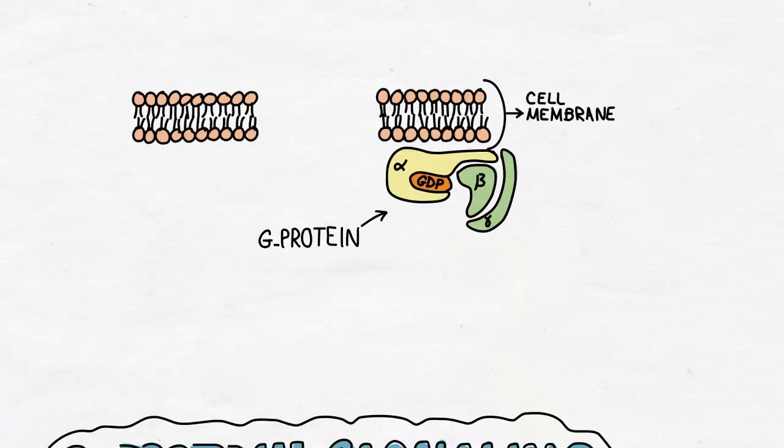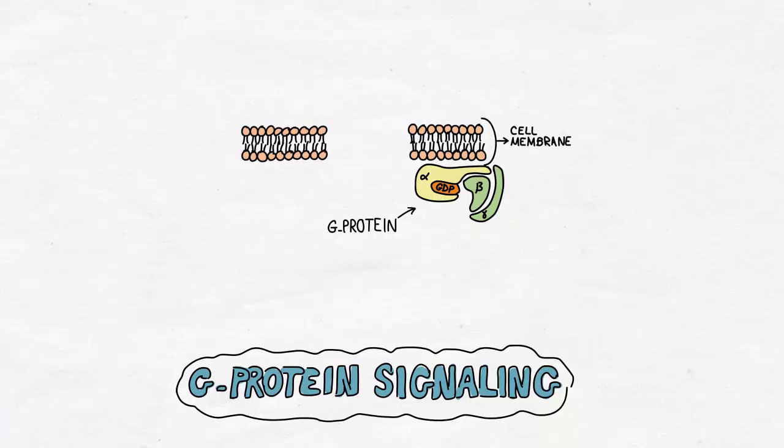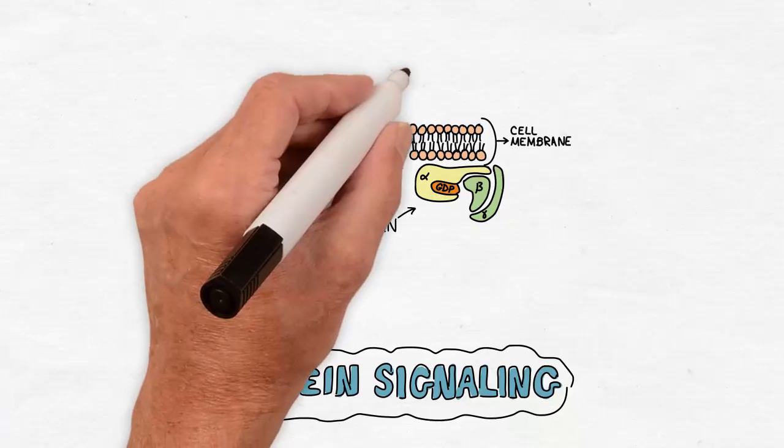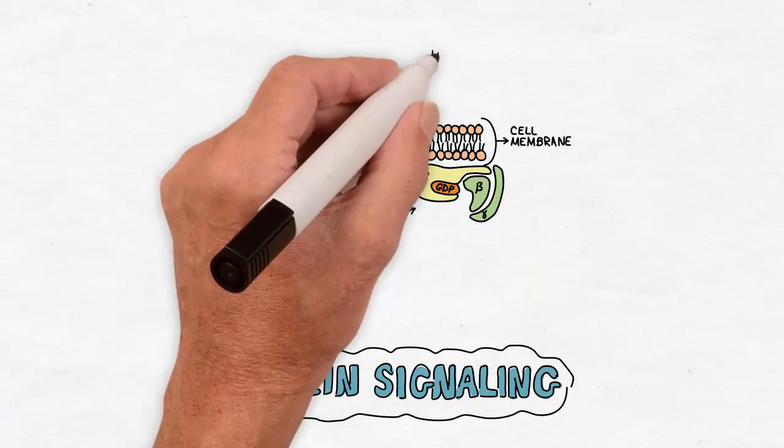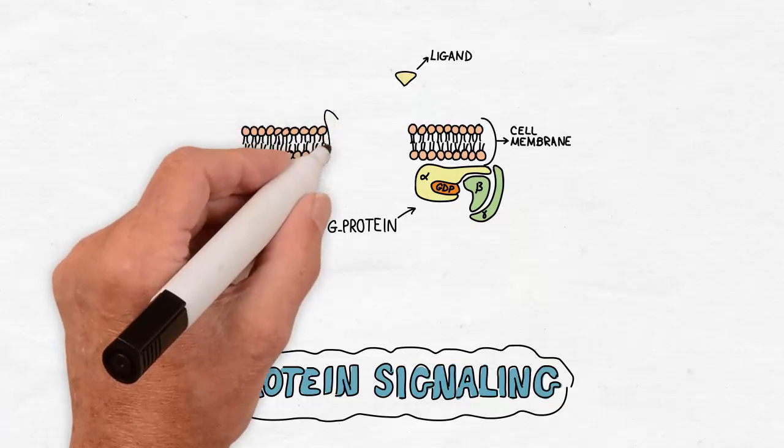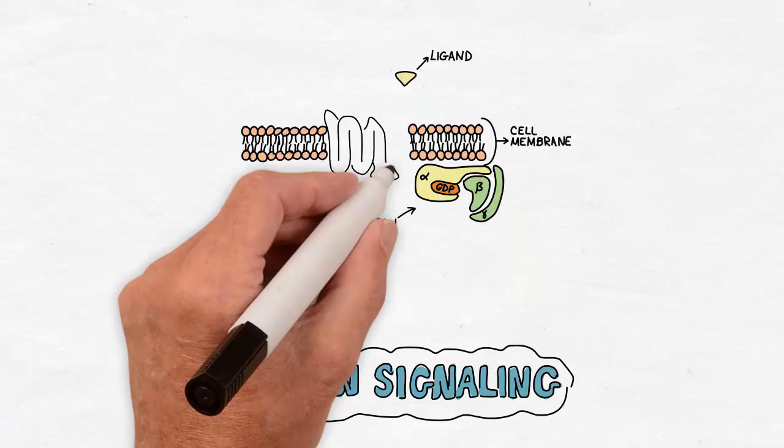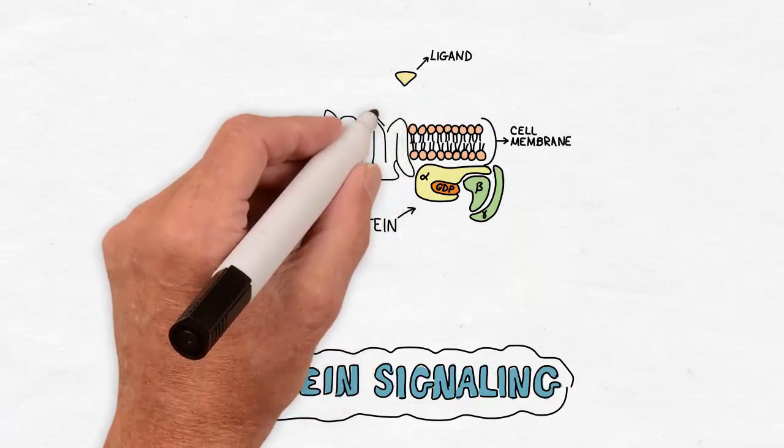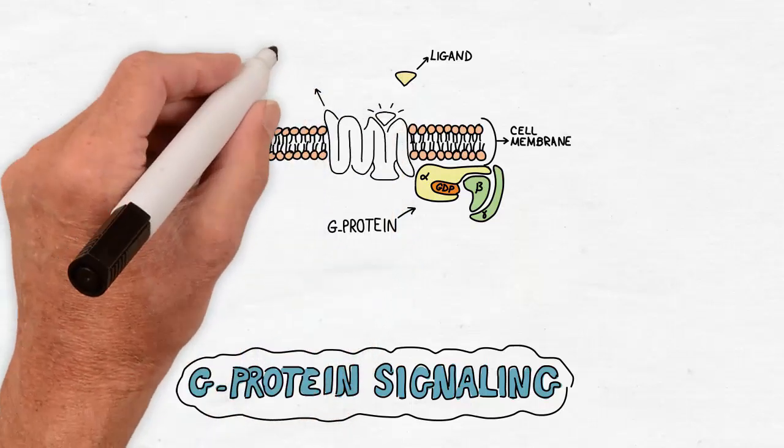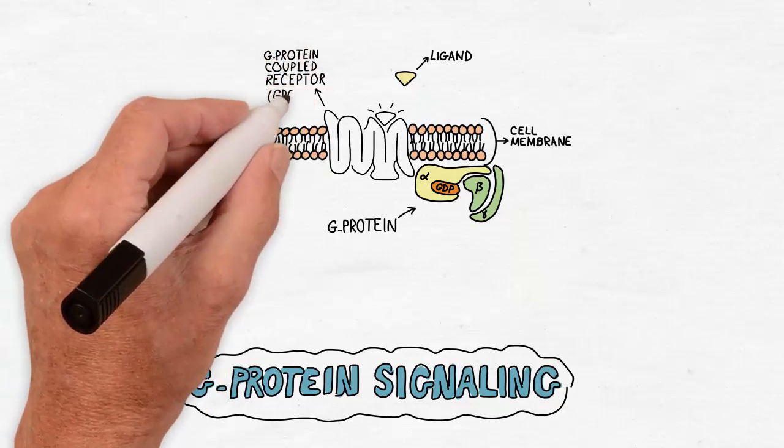The alpha subunit carries guanosine diphosphate GTP molecule when inactive and it has different forms making different types of G-proteins accordingly. The signaling process is initiated by a ligand like a hormone or a neurotransmitter binding to a receptor linked to the G-protein and hence called G-protein coupled receptor or GPCR.